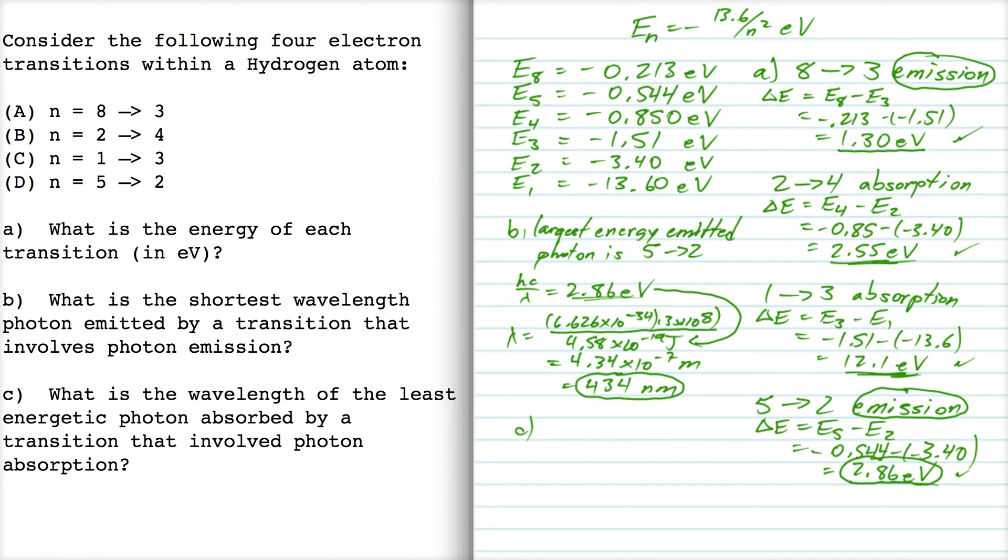Part C asks, let's see, the wavelength of the least energetic photon absorbed. So here's our two absorption, and the least energetic one is going to be this guy right here. So 2 to 4. So the least energetic photon absorbed is going to come from the 2 to 4 transition.